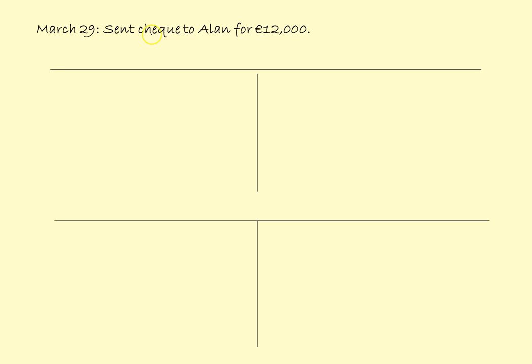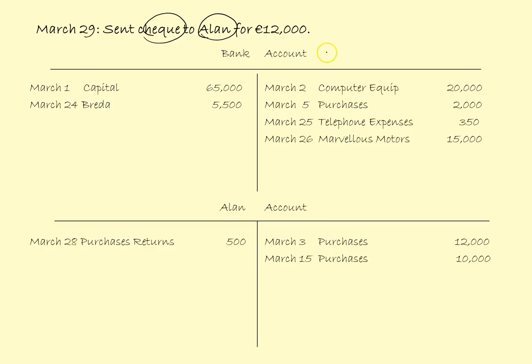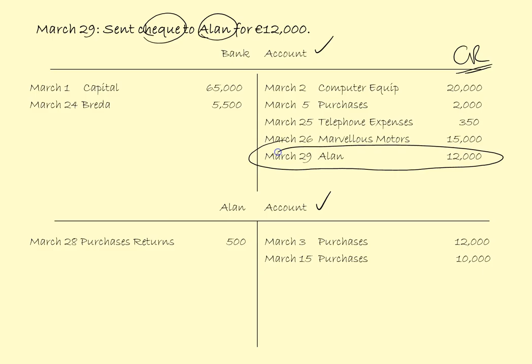March the 29th: sent a cheque to Alan for 12,000. Cheque implies bank, and we already have Alan's account. We are sending a cheque to Alan so money is coming out of the bank — we credit the bank: March the 29th, Alan, 12,000. And the double entry is we debit Alan's account: March the 29th, Bank, 12,000.